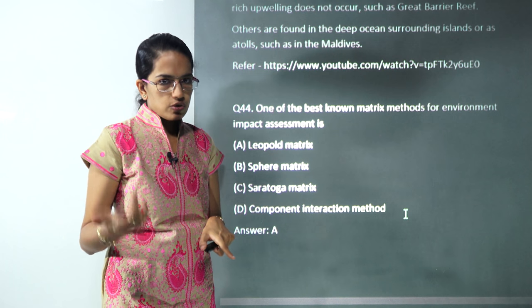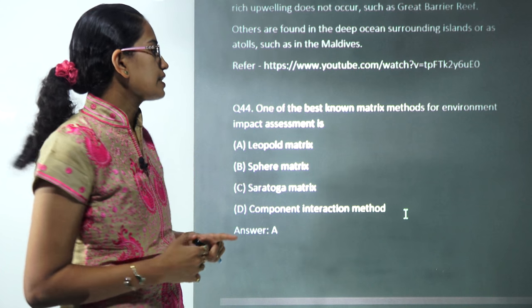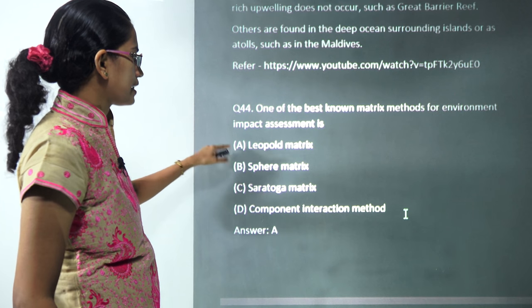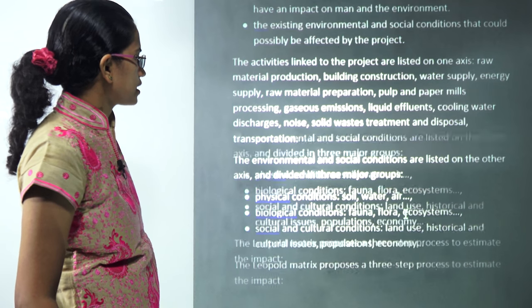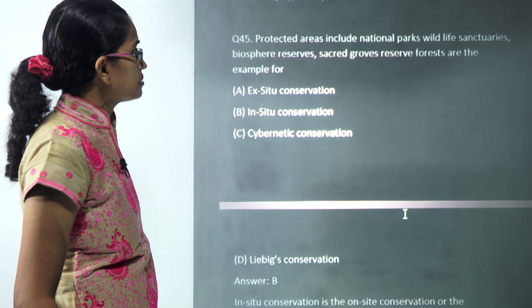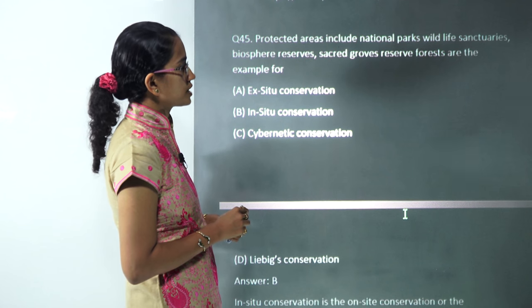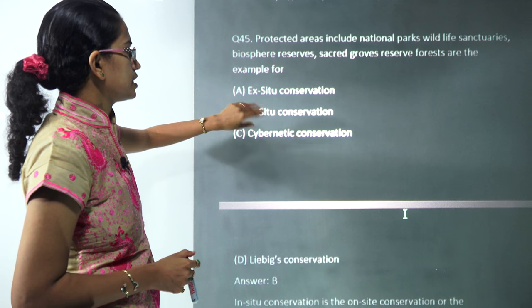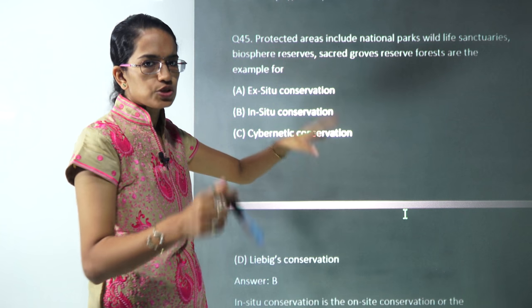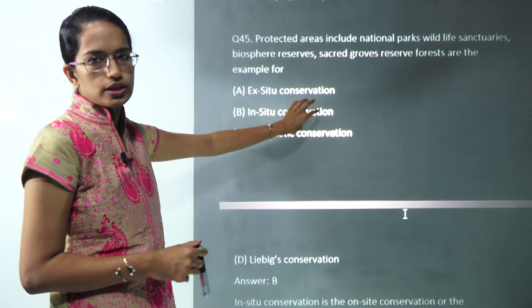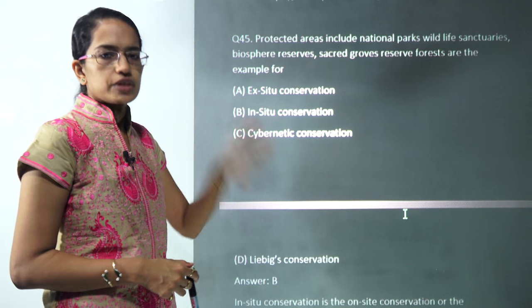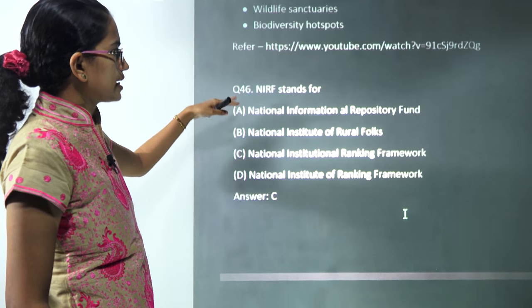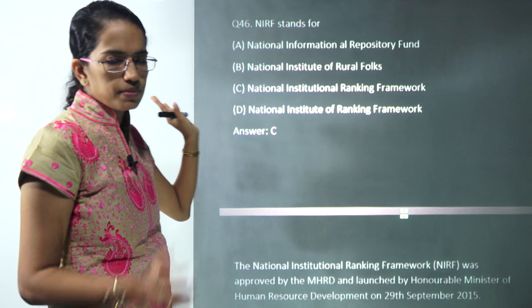Environmental impact assessment, we have already covered one lecture, just refer that. The best known metrics for environmental impact assessment is Leopold matrix, so A is the correct answer. The next question talks about protected areas for national parks, wildlife sanctuaries, biosphere reserves. The protected areas are basically within the natural surroundings, the natural habitat, and that's what is in-situ conservation. You are preserving them within their region, so that's what is in-situ conservation.